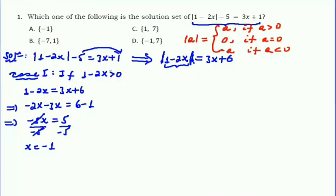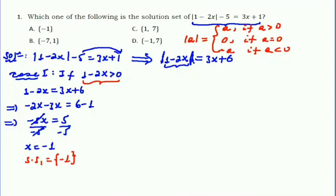When we substitute minus 1 into the first case condition, 1 minus 2 times minus 1 is always positive. Therefore the solution set for Case 1 is x equals minus 1. Now let us proceed to the second case.